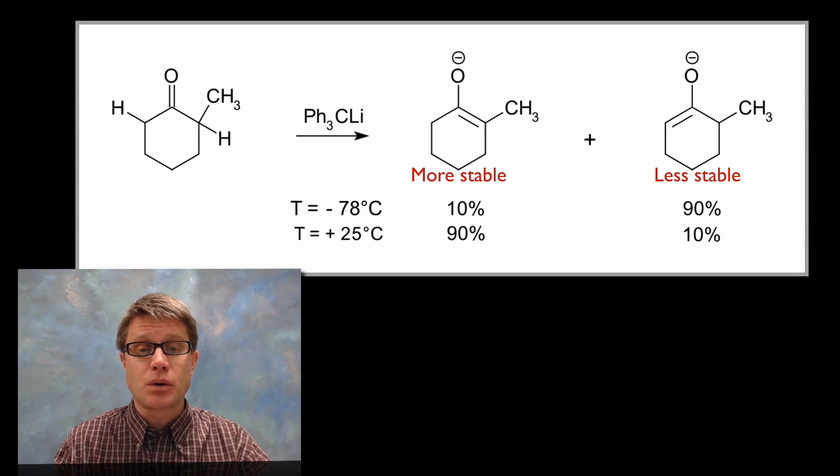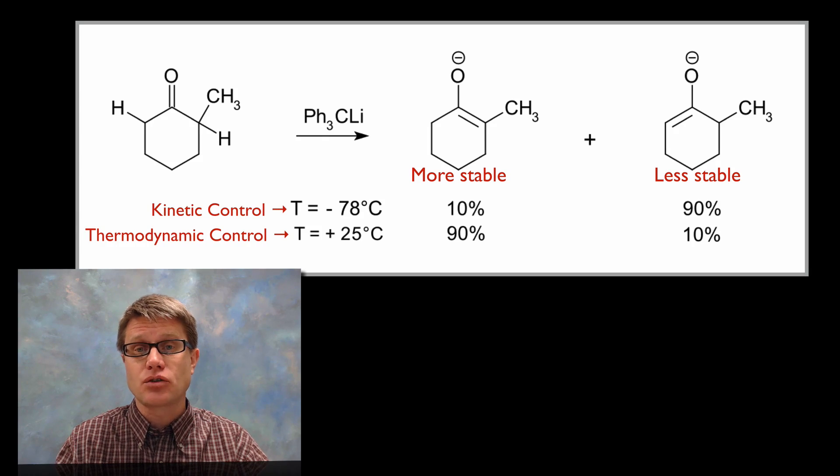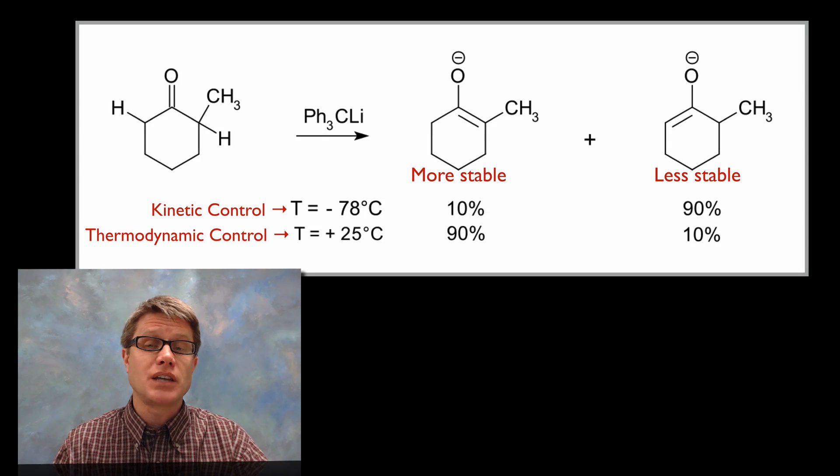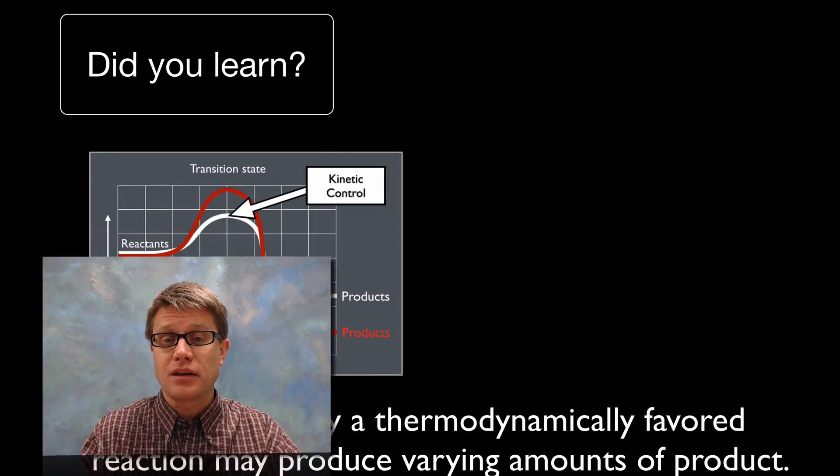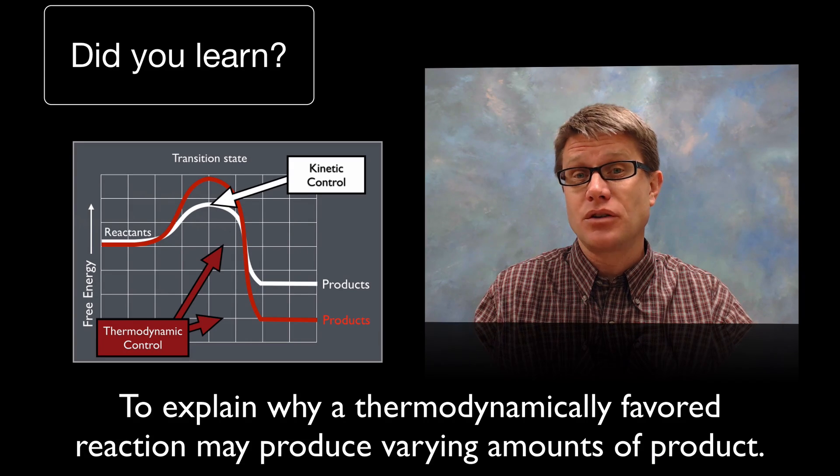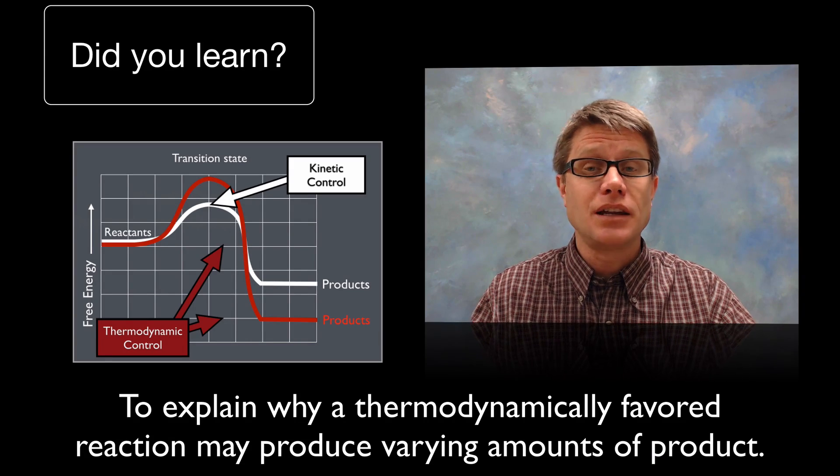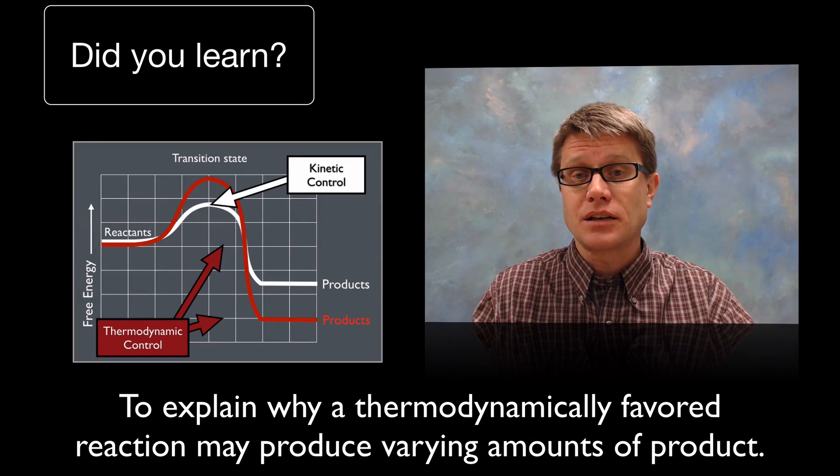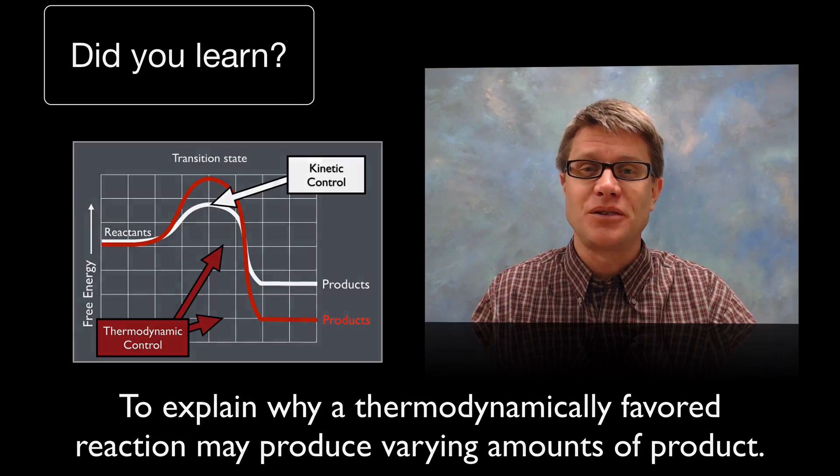And so in that first process again there was kinetic control going on because we didn't have the energy. We didn't have the money to take that path. But if we do it's more advantageous to take the thermodynamic path. And so again can you explain why a thermodynamically favored reaction may produce varying amounts of products? Again it depends on which pathway you're taking. If you're controlled by the kinetics then you're going to take that lower pathway. And I hope that was helpful.